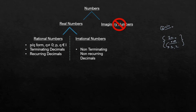Imaginary numbers are not in our syllabus, so we will not be dealing with them. Real numbers can further be divided into rational and irrational numbers. Rational numbers are numbers in the form p/q where q is not equal to zero — the denominator should not be zero — and p and q must be integers.